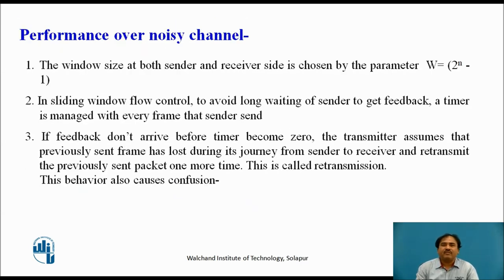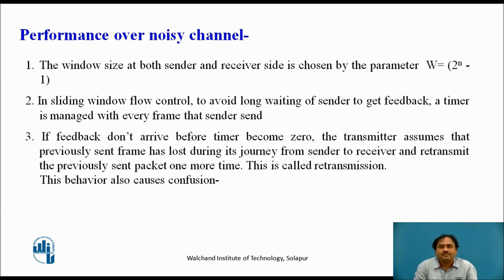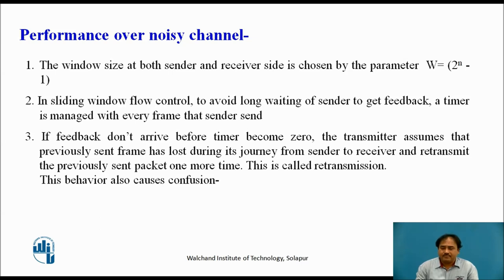But there is still a problem even when the window size is set to 2 raised to n minus 1, especially on networks that carry more noise during communication. In these cases, the sliding window flow control attaches one timer for every frame transmitted. We load a count into the timer, and before this count reaches 0, the sender expects feedback from the receiver. If the feedback doesn't come in the given time period — that is, if the timer elapses to 0 — the sender repeats the same packet once again. This is normally called retransmission of the frame in the sliding window.